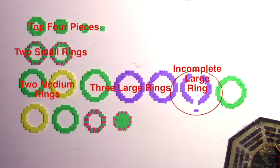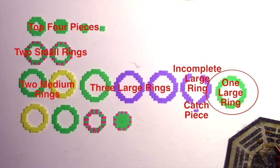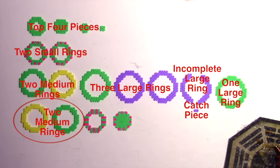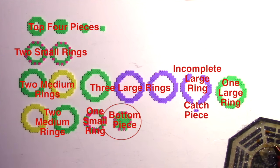Then this layer is the incomplete large ring. It's the same size as the large rings, just missing some of the beads on the front and back. Comes with this little guy, who's just two beads. That's going to act as a kind of a catch piece to keep the egg closed. Then another large ring, followed by two medium rings. One more small ring. And finally, the bottom piece.